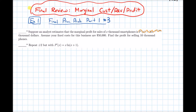In this video, we are beginning our final exam review by looking at an example involving marginal cost, revenue, and profit. The example is from our final practice problems, part one, question number three.